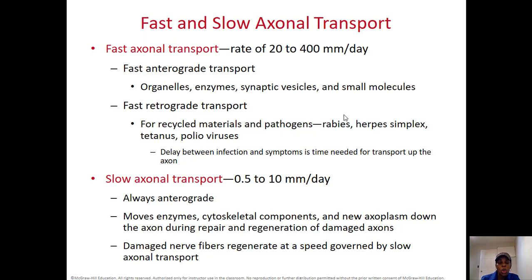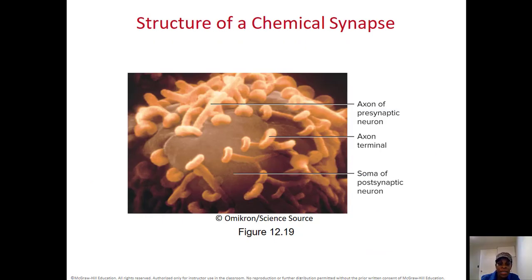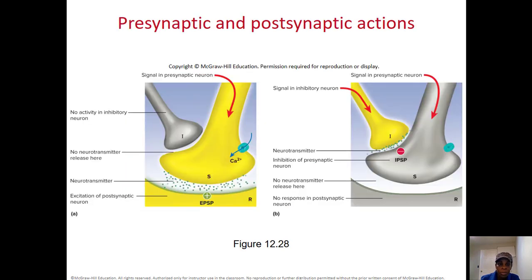Slow axonal transport is always anterograde — from the cell body to the axon terminal — moving enzymes, cytoskeletal components, and other things. Looking at the synapse, you can see axon terminals of the presynaptic neuron attaching to the soma or dendrites of the postsynaptic neuron. Other neuron terminals can also work on the presynaptic neuron to modulate its activity depending on the situation.